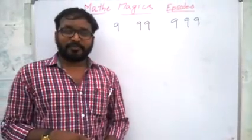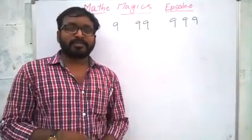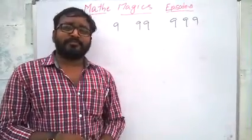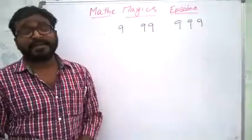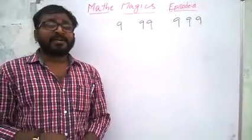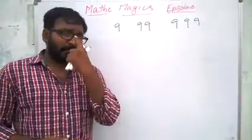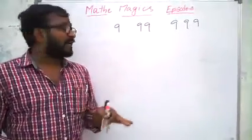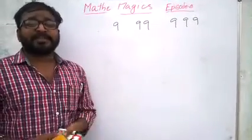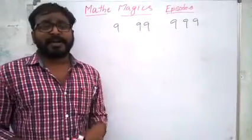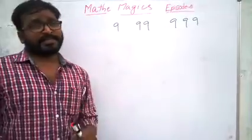Welcome to Winner's Weapon, and welcome to the episodes on Mathemagics, episode number eight. Till now we learned different types of multiplications. Here we can learn multiplication with 9, 99, triple 9, four 9s, like that.